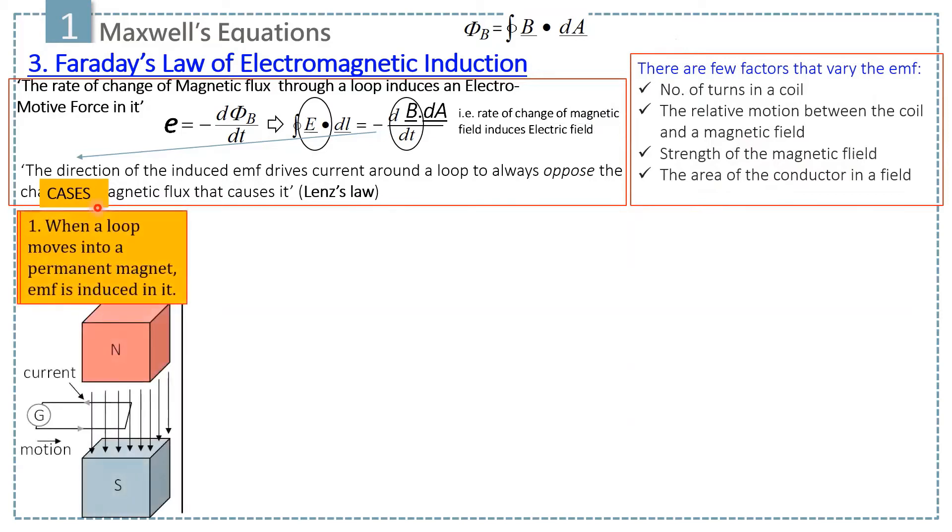The first case, consider a wire placed in a magnetic field of permanent magnet, and also this wire is connected to galvanometer. When wire is at rest, galvanometer shows no current. When it moves from left to right, galvanometer shows current. When it moves from right to left, the galvanometer shows current again, but this time in opposite direction.